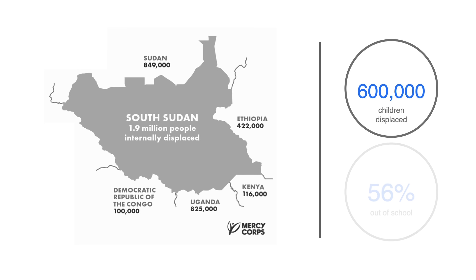The current solution to this is to place children in school grades much lower than their age. As you can well imagine, it's humiliating to be in a class with students four years younger than you. This leads to bullying, and often the refugees drop out. 56% of Uganda's South Sudanese refugee children population do not currently attend school.